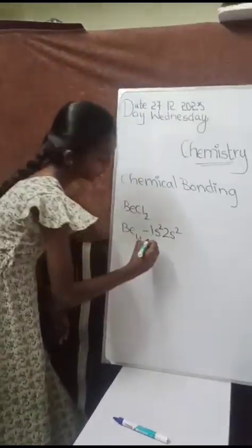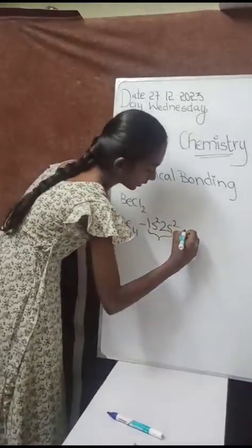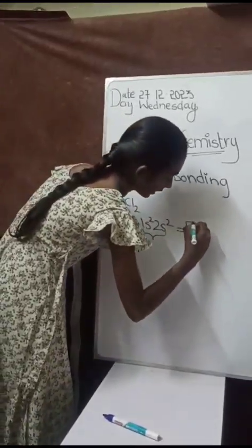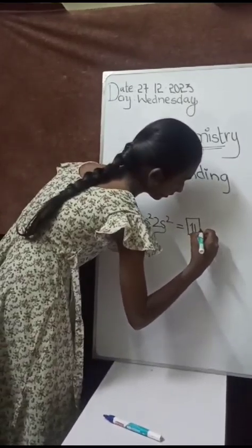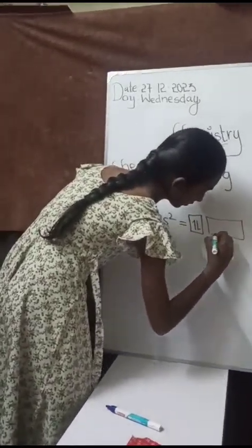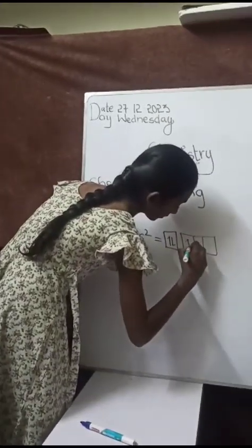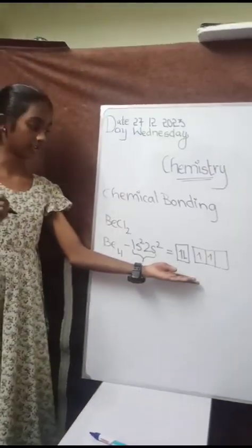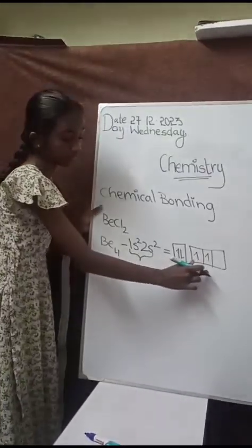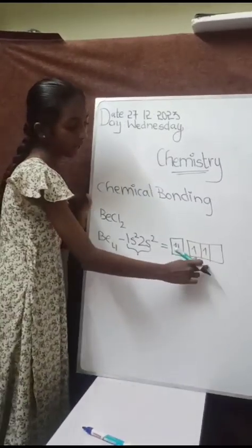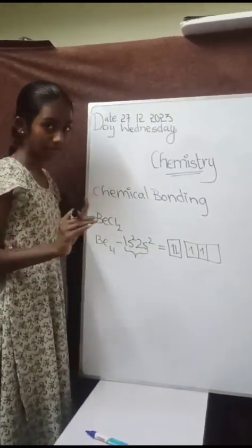Now, we are going to take these two shells. How can we write this in a diagram? Like this we are writing. Here we have three shells and the two electrons are also unpaired.